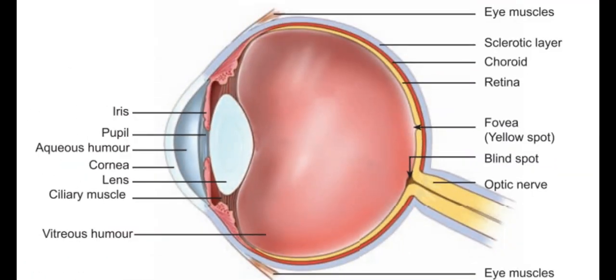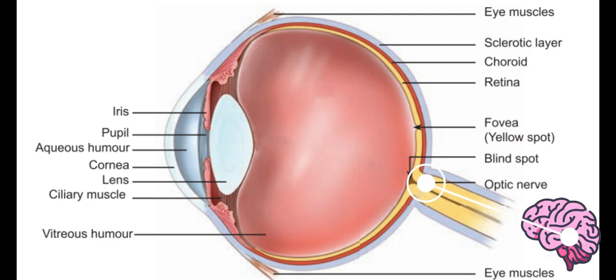What is this part right here? It is the yellow spot or fovea - it is where sharp images are formed. Is this the optical nerve? You're correct, Jonathan. This is the part that carries visual signals from the eye to the brain.